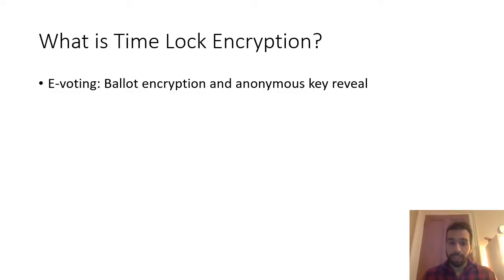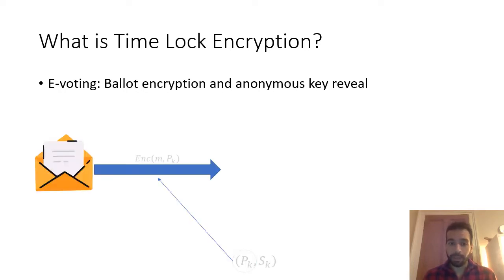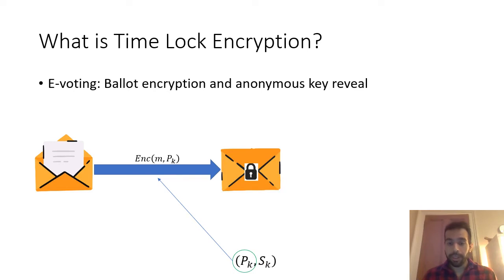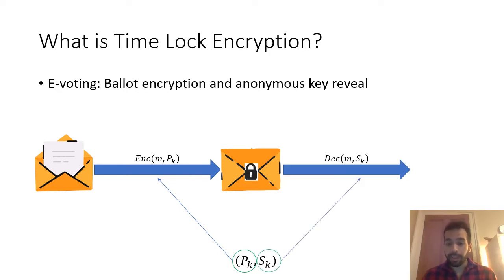So first, what is time-lock encryption? Consider the scenario in e-voting where a voter encrypts the ballot with a public key and an encryption algorithm, and the result is the encrypted ballot. Next, the voter that holds the secret key for that particular public key reveals it, and then everyone can use the decryption algorithm in order to retrieve the initial message.